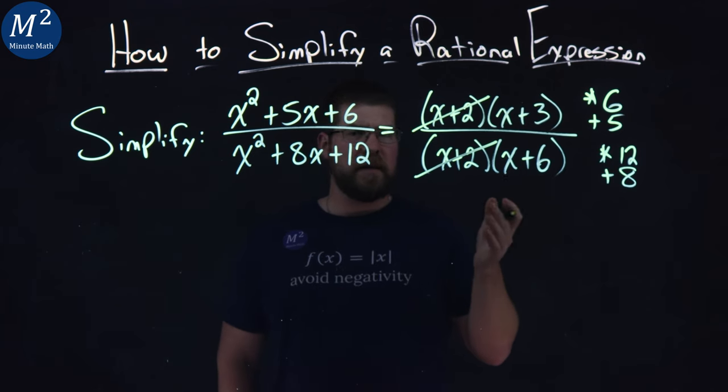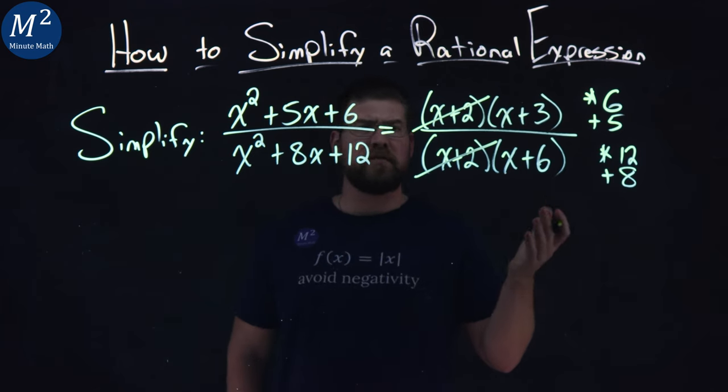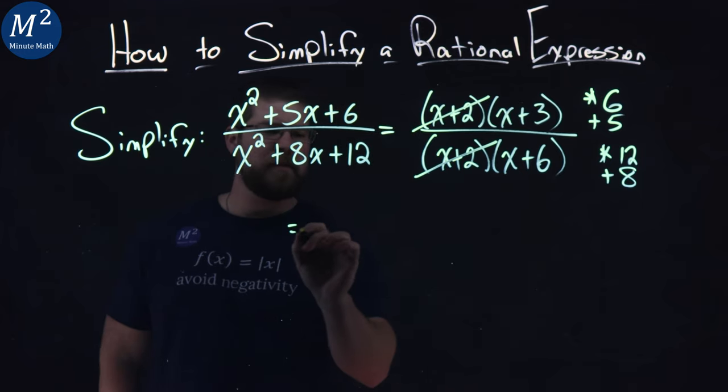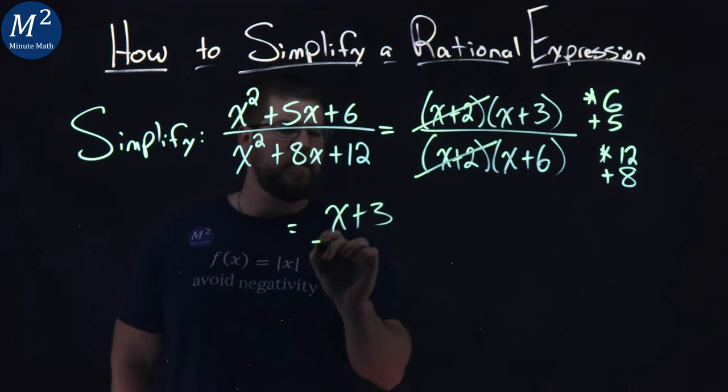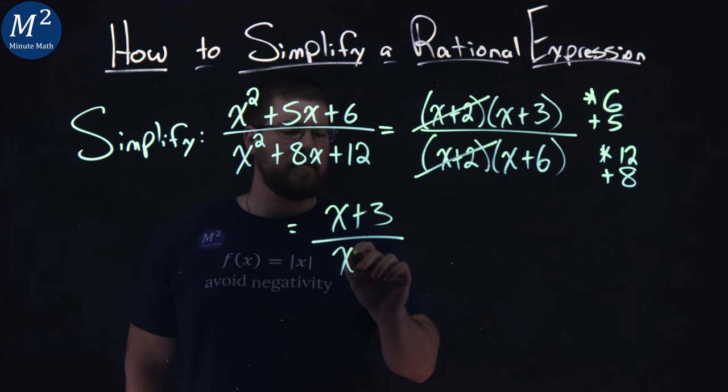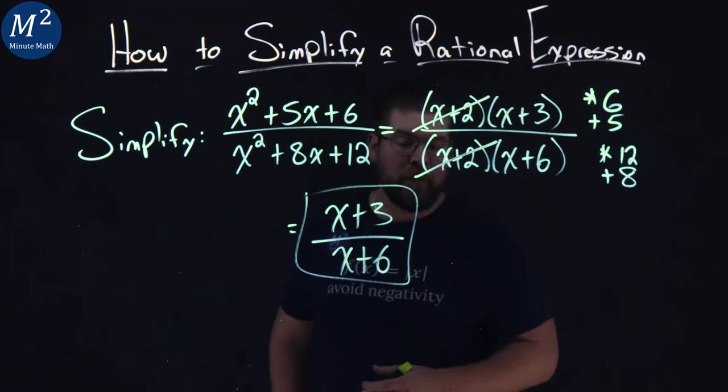So after that, well, I think we have our answer, right? We just have x plus 3 in the numerator over x plus 6. That can't really simplify anymore, and then we're done.